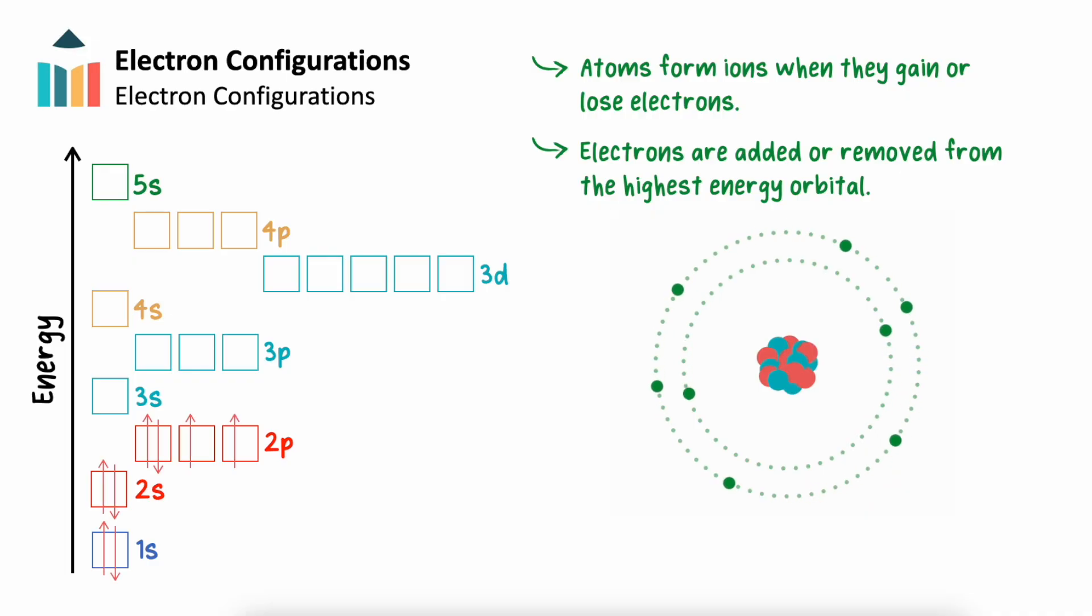For example, oxygen has 8 electrons, with an electron configuration of 1s2, 2s2, 2p4. When oxygen forms the oxide ion, it will gain 2 electrons, forming a charge of 2-. It will have a new electron configuration of 1s2, 2s2, 2p6, with the 2 extra electrons added to the 2p sub-level.